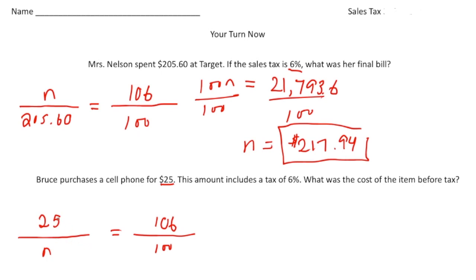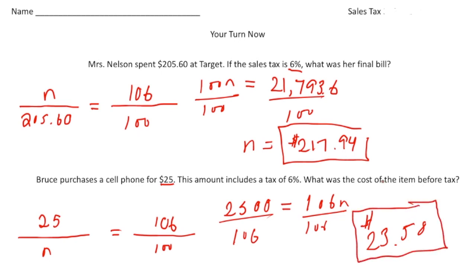So now we can write our equation. So 25 times 100 is 2,500. And that's going to equal 106 times n, which is 106n. And then if I divide both sides by 106, 2,500 divided by 106 gives us $23.58. So $23.58. So that was the cost of the phone, I'm assuming like a phone protector or something, before the 6% tax was added. All right, how'd you do? All right.